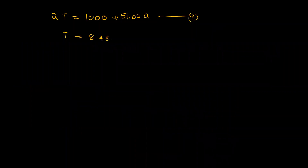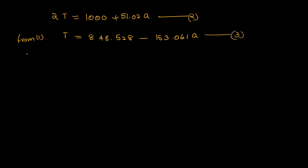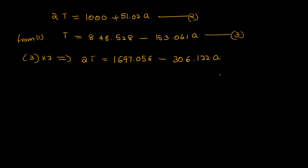From equation one: 848.528 minus 153.061 a, so T is equal to 1697.056 minus 306.122 a.